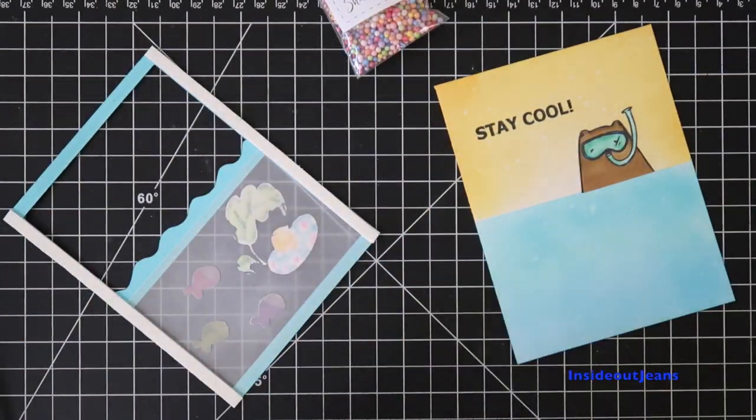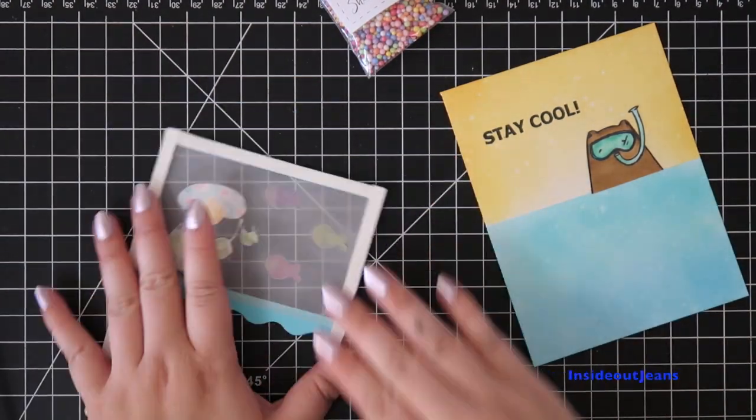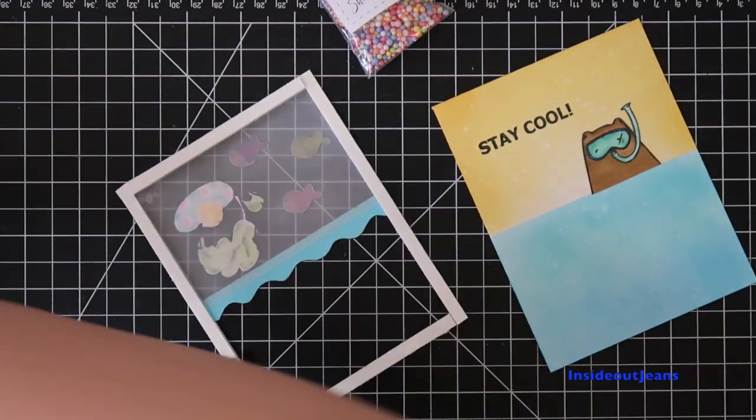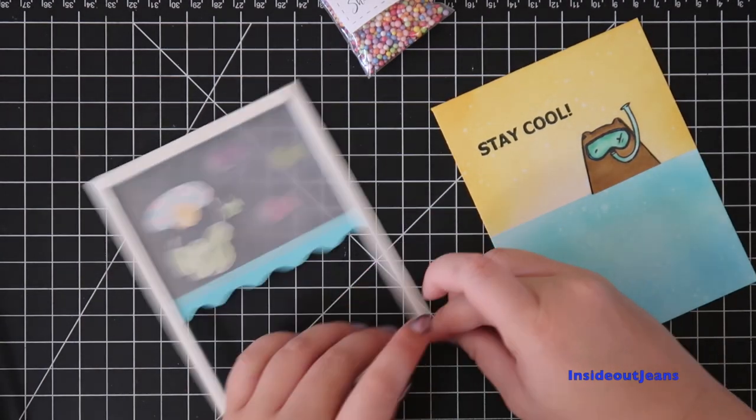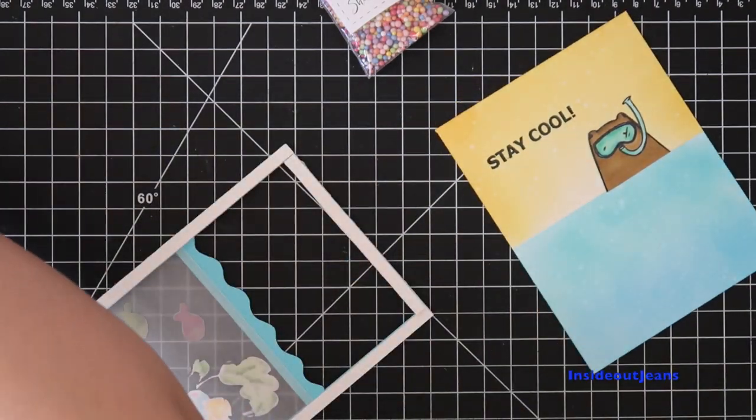Now I just need to add foam tape to the edges of the card and behind the waves to create the shaker element to this card. I've already pre-cut quarter inch pieces of foam tape to go around the edge of the card and right behind those waves. Since I'm using Drive By Crafts Itty Bitty Shaker Fun, I want to use two layers to make sure that these little balls can shake and move freely around this card.